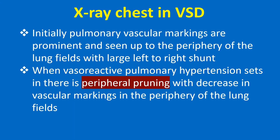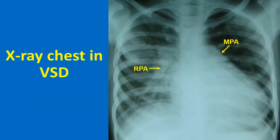Initially, pulmonary vascular markings are prominent and seen up to the periphery of the lung fields with large left-to-right shunt. When vasoreactive pulmonary hypertension sets in, there is peripheral pruning with decrease in vascular markings in the periphery of the lung fields. X-ray chest of a child with VSD, left-to-right shunt, and hyperdynamic pulmonary hypertension shows cardiomegaly, prominent main pulmonary artery segment and right pulmonary artery, and enlarged left pulmonary artery shadow below the left cardiac border within the cardiac silhouette.